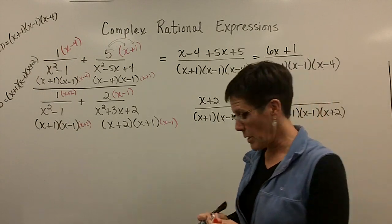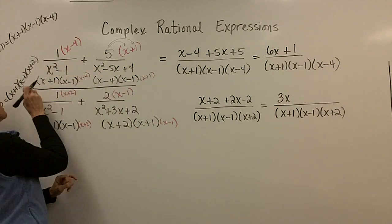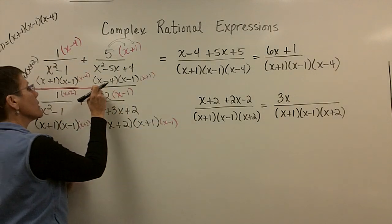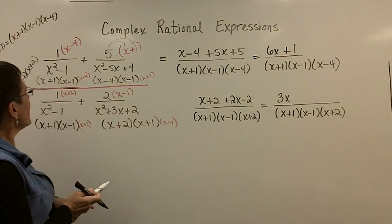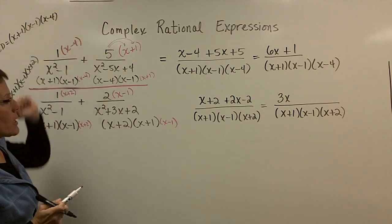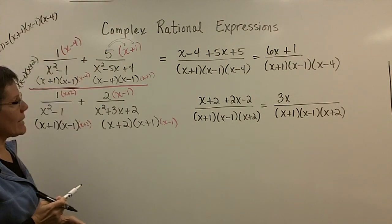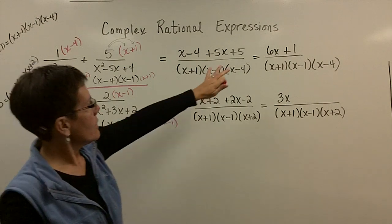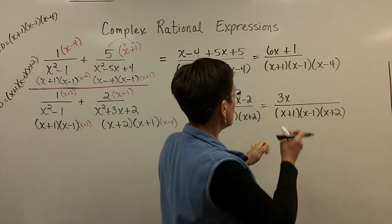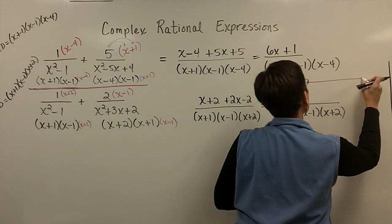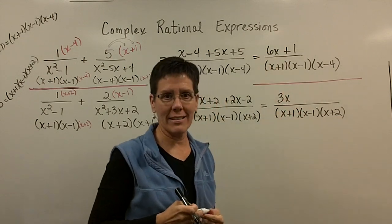But please remember, this was a complex rational expression. This had a big fraction bar in the center there. I added the two fractions in the numerator. There is the numerator's answer. There is the denominator. I have to now take this and divide it by that.